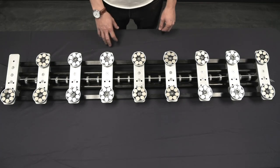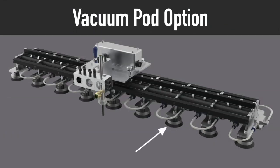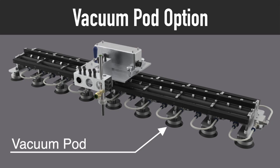Alternatively, on a non-magnetic surface, we provide vacuum pods to replace the magnets. Each one of these vacuum pods holds 120 pounds per pod. Each of these pods are paired with pneumatic venturis, so if one of them would lose suction, the other pairs continue to adhere to the surface.